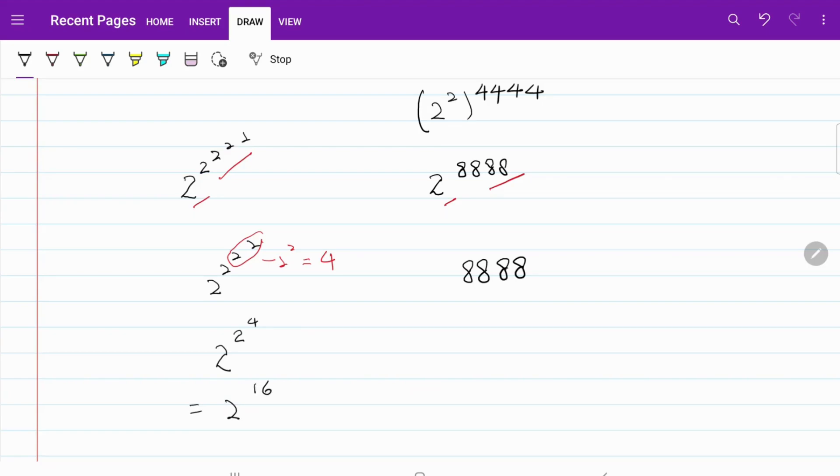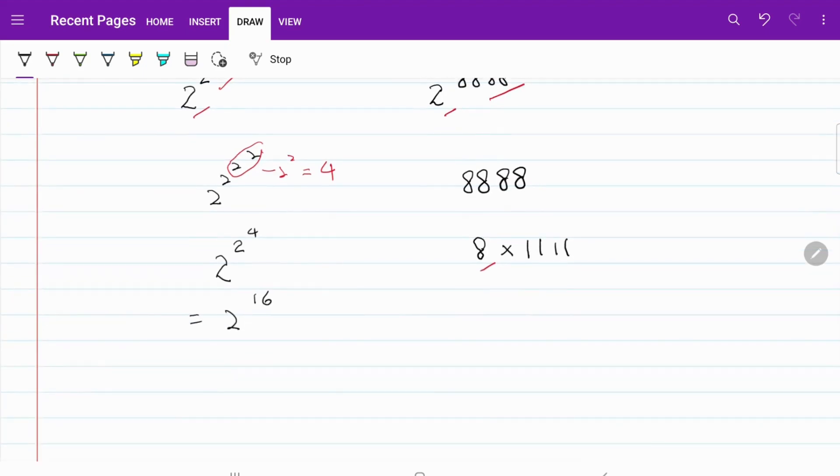Now, on the right-hand side, 8,888. I'm going to write that as 8 times 1,111. From here, let's express 8 as a power of 2, meaning I'm going to write that as 2 cubed multiplied by 1,111.